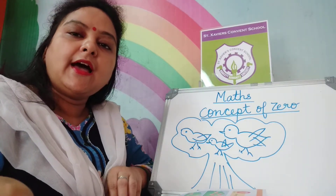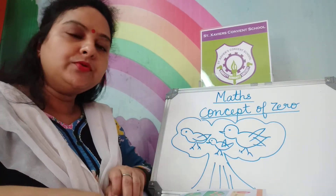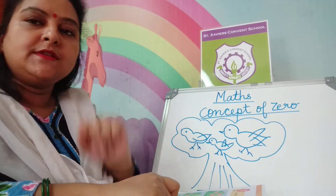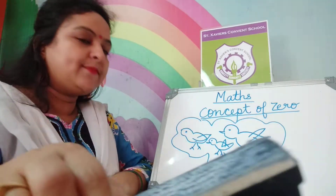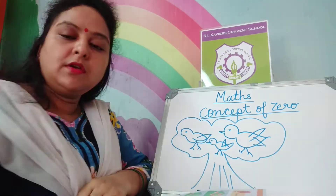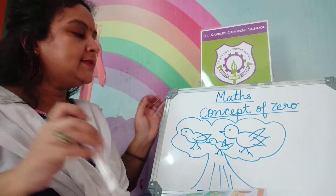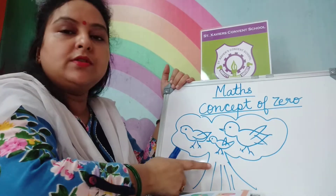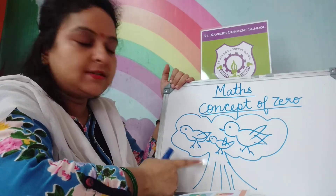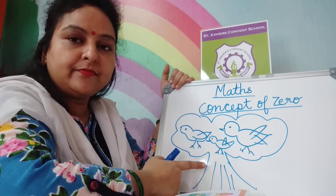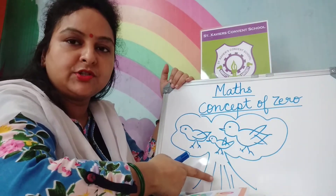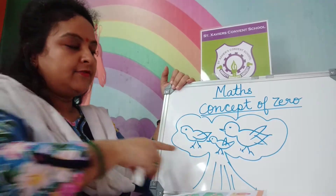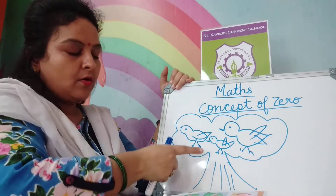Children, today I will teach you the concept of zero. What is the concept of zero? Here you can see there are three birds sitting on a tree. Three birds are sitting on a tree.